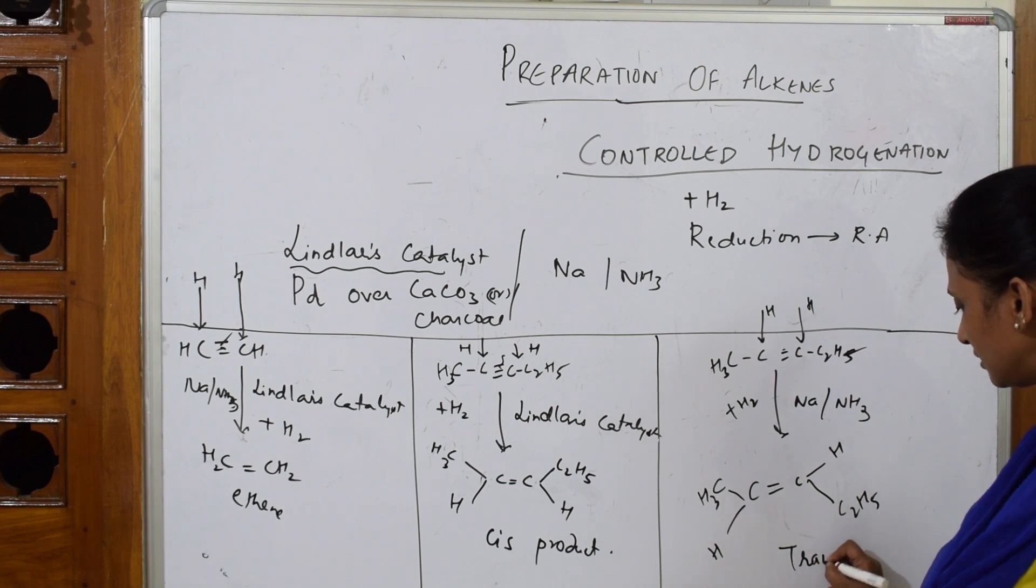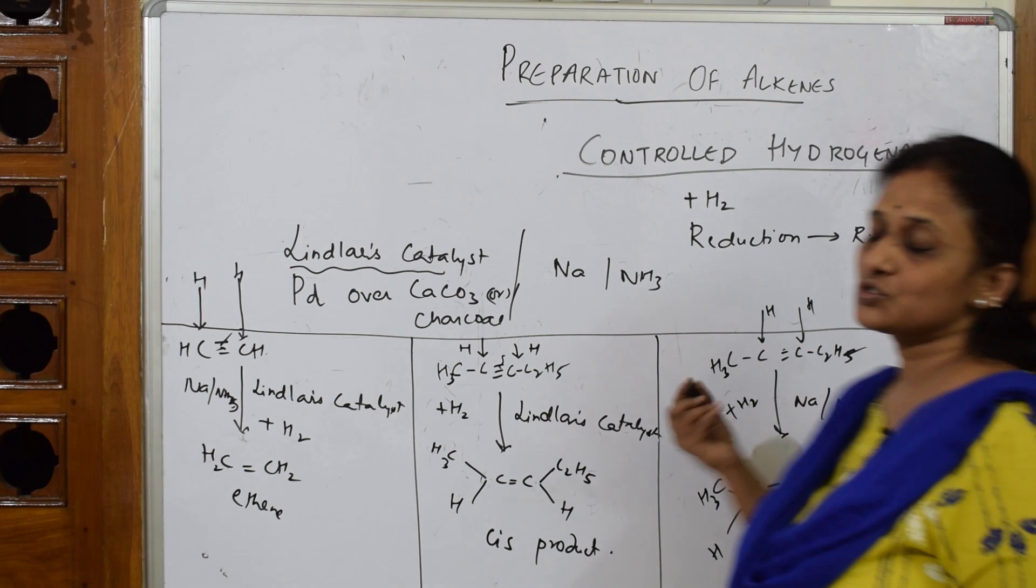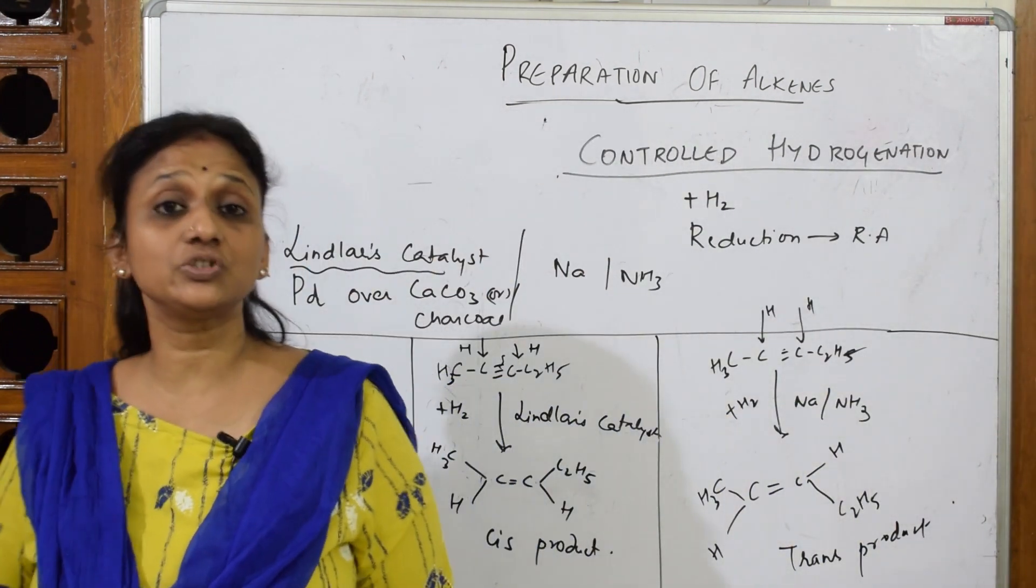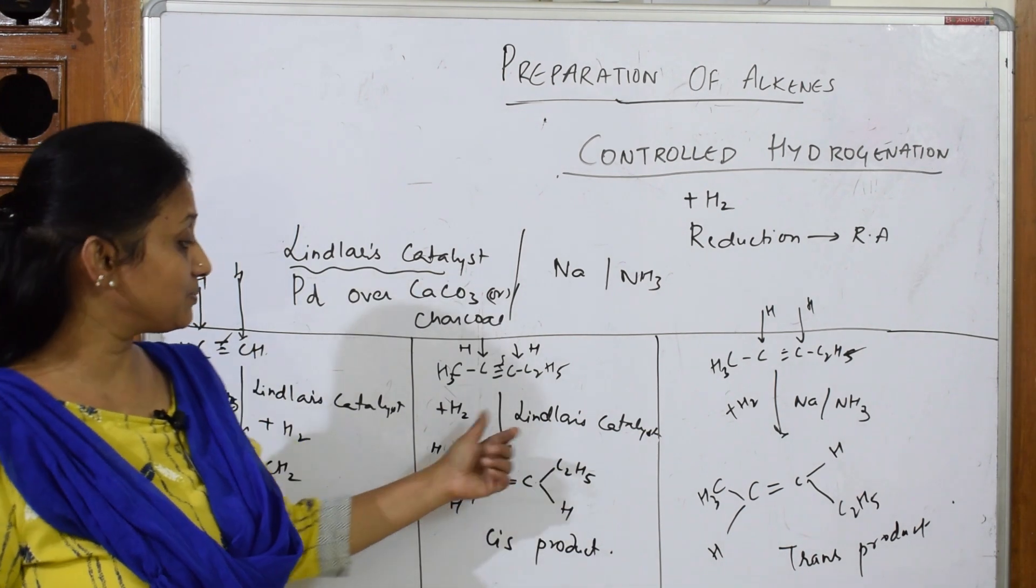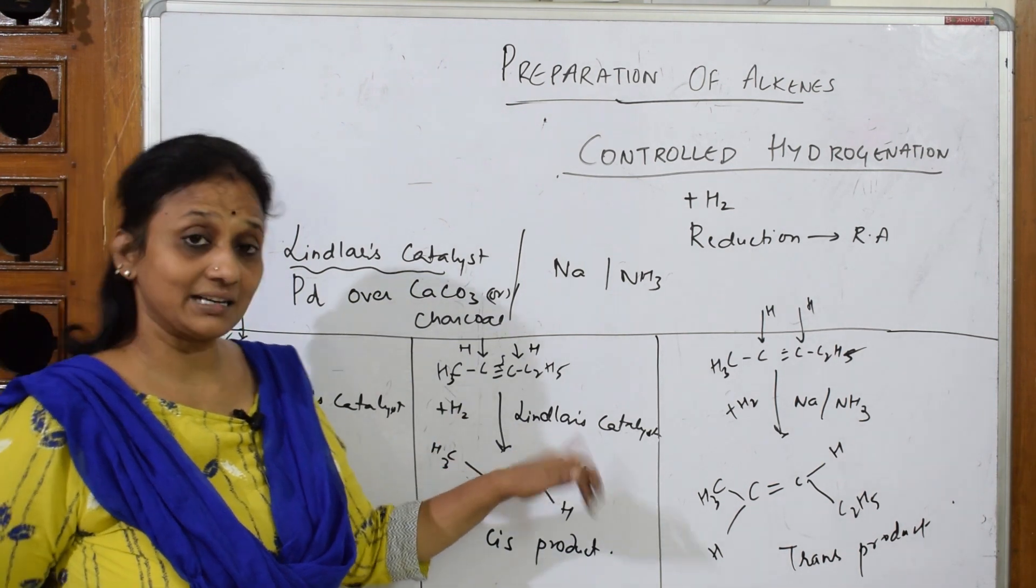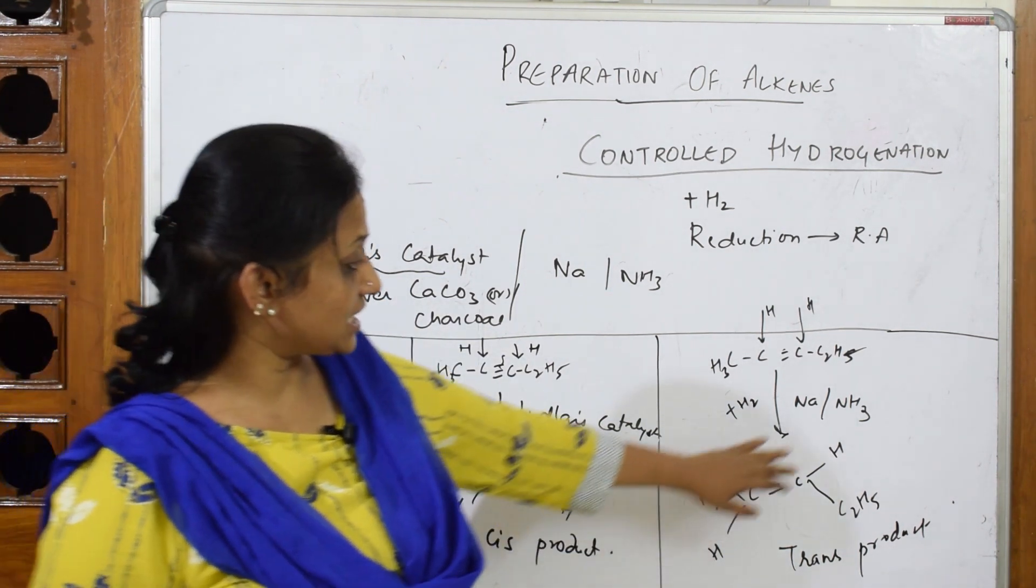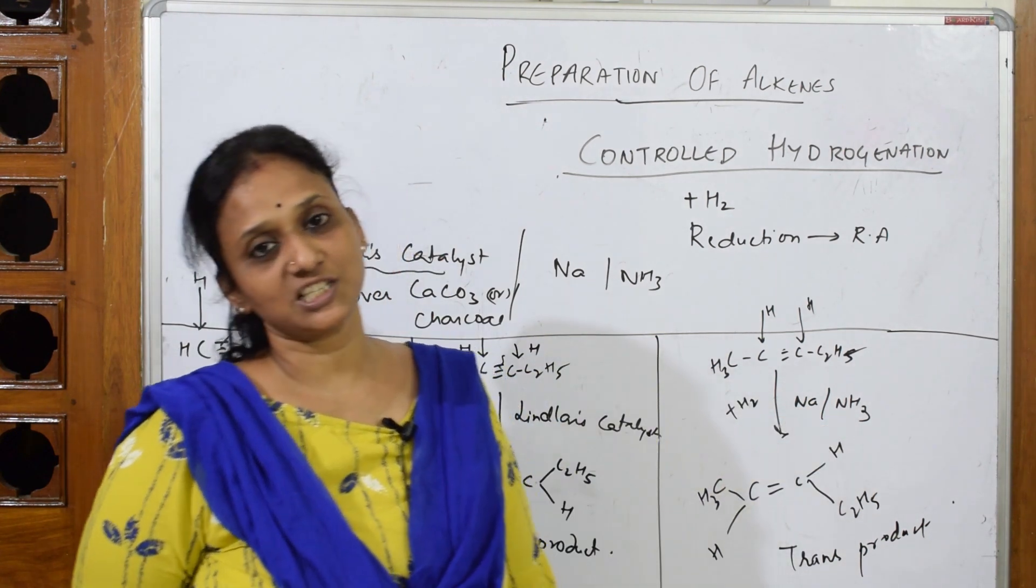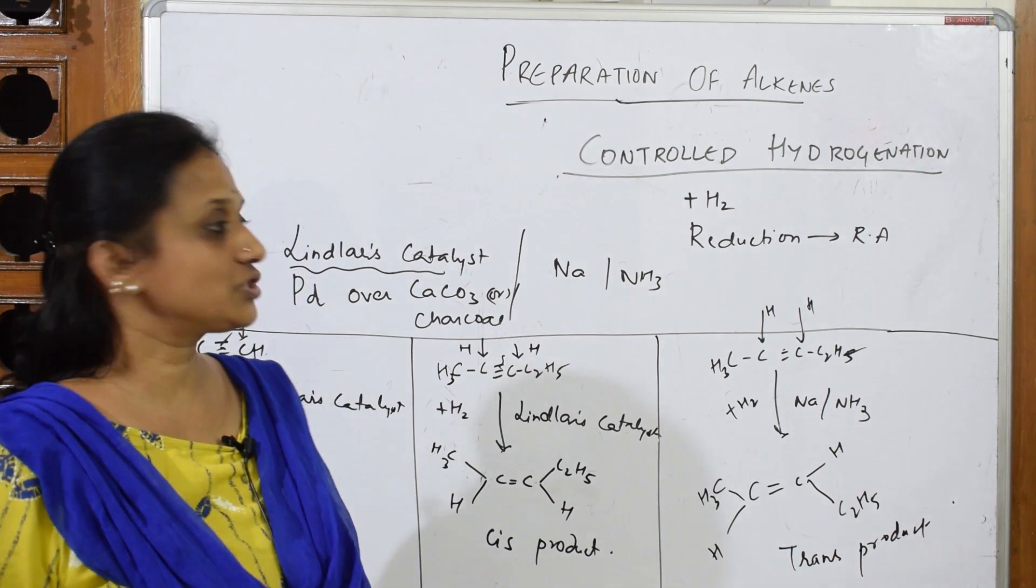So this is called controlled hydrogenation reaction. You have to be very specific. When your teacher gives you - simply she will give you an alkyne, she'll give you hydrogen, you have to see the catalyst. If it is Lindlar's catalyst, you get cis product. If it is Na/NH3, you'll get trans product. So this is your controlled hydrogenation reaction.